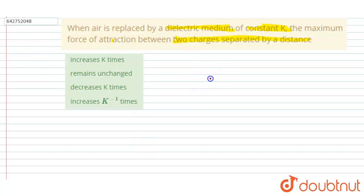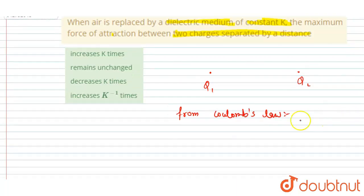So if I draw the two charges, this is q1 and this is q2. From Coulomb's law we know that the force between the two will be equals to k q1 q2 by r square.